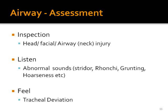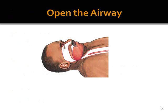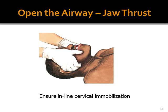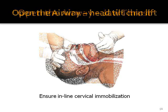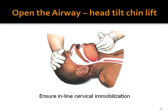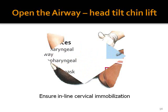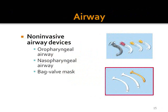We also inspect the neck for distended neck veins. The next intervention is to open the airway, which we can do in two ways: either the jaw thrust maneuver, ensuring inline cervical immobilization, or head tilt-chin lift. We do jaw thrust for patients likely to have a cervical spine injury; if cervical spine injury is ruled out, then we can do a head tilt-chin lift. We then insert an airway — either oropharyngeal or nasopharyngeal — depending on whether the patient has a gag reflex or not.